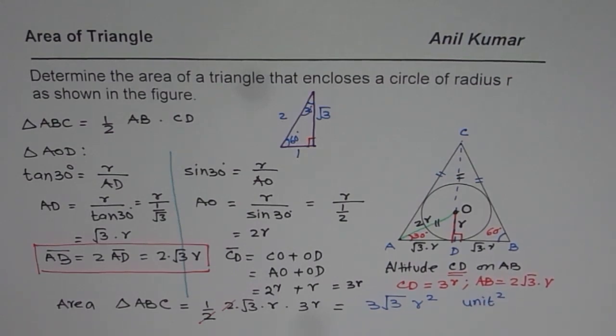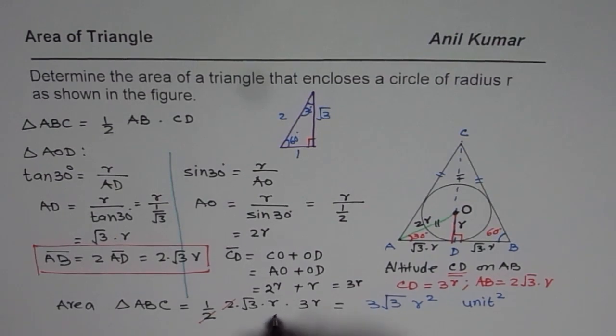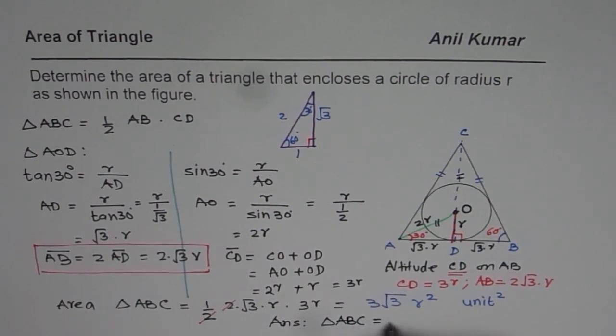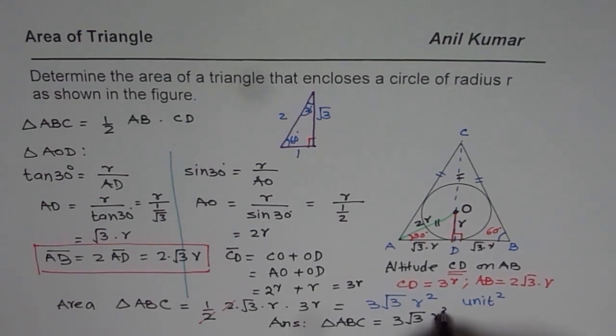And the units will be whatever units are for the R, so we will write unit square for the time being. So that gives us the accurate answer. And that is the exact value of the answer. The area of the triangle ABC is equals to 3 square root 3 R square unit square.